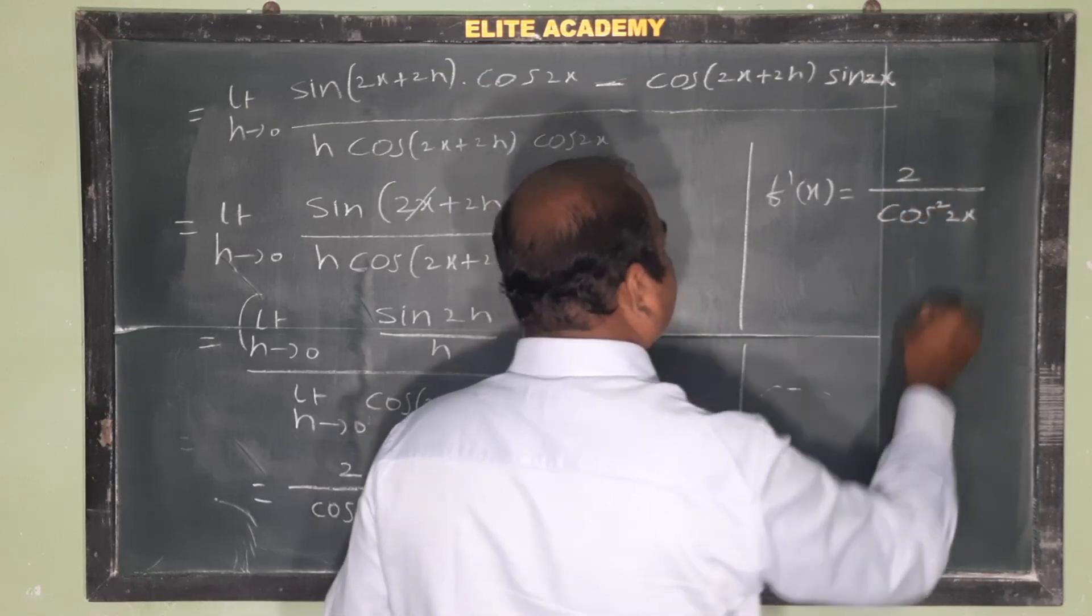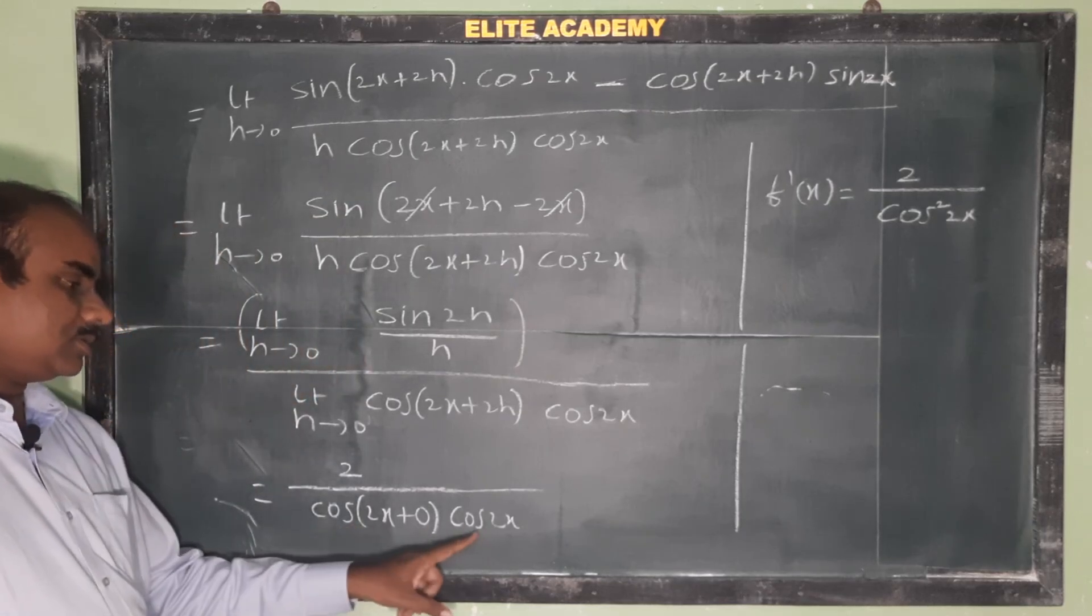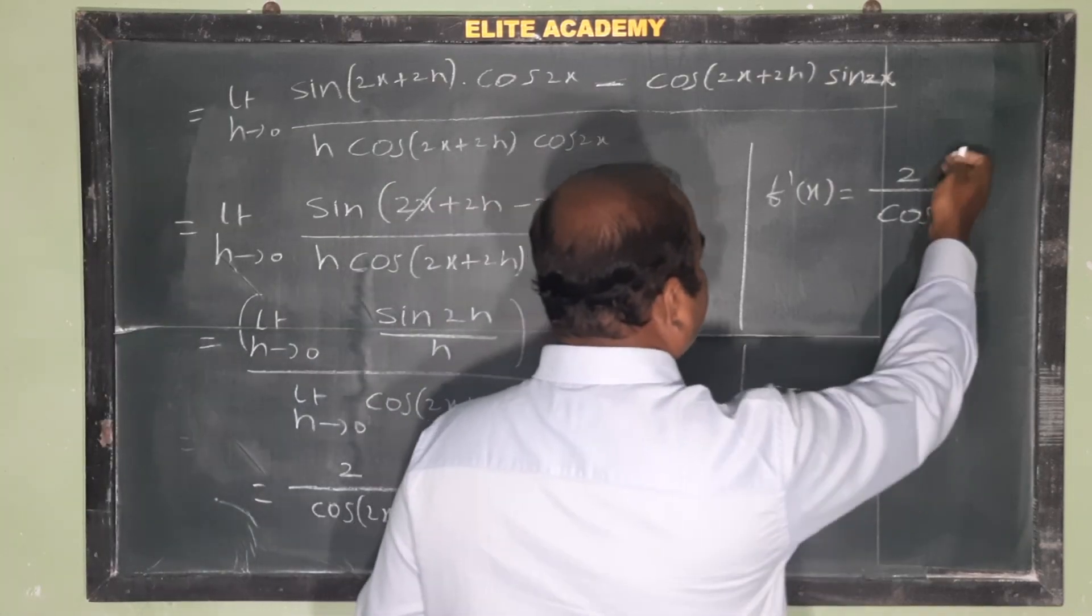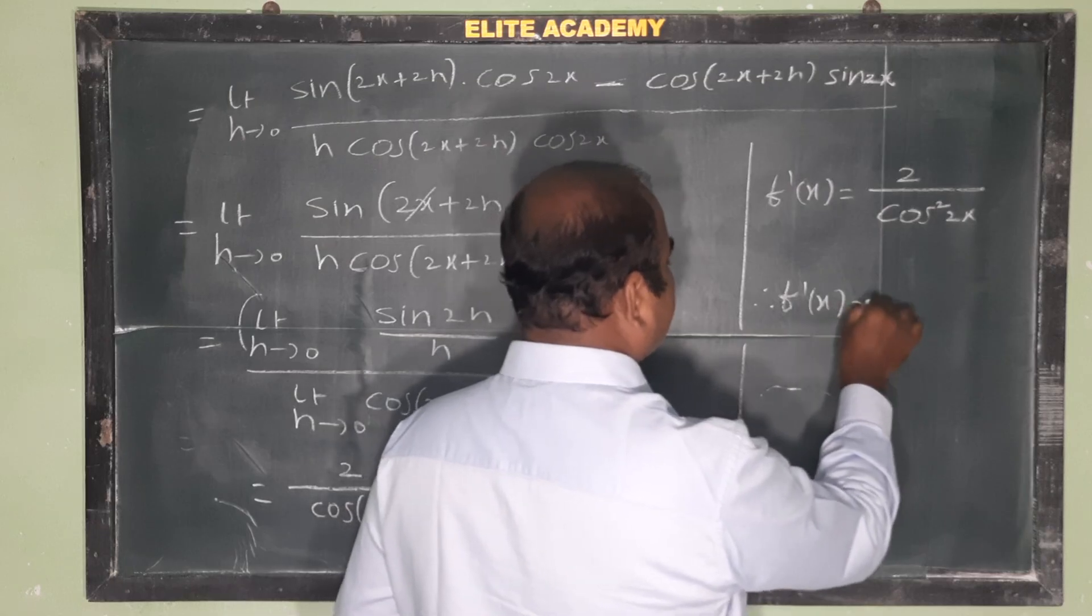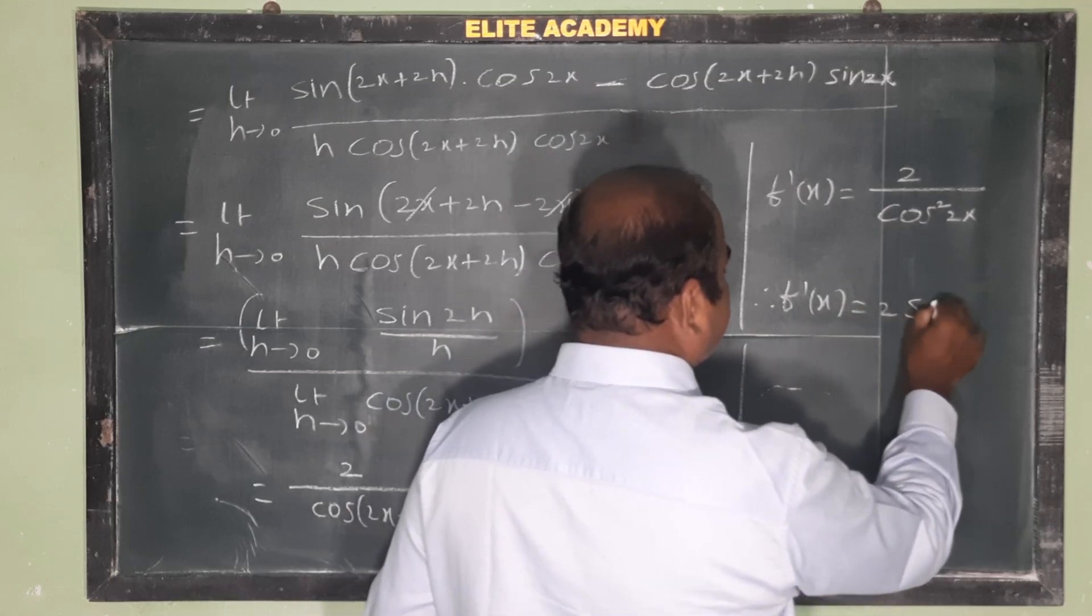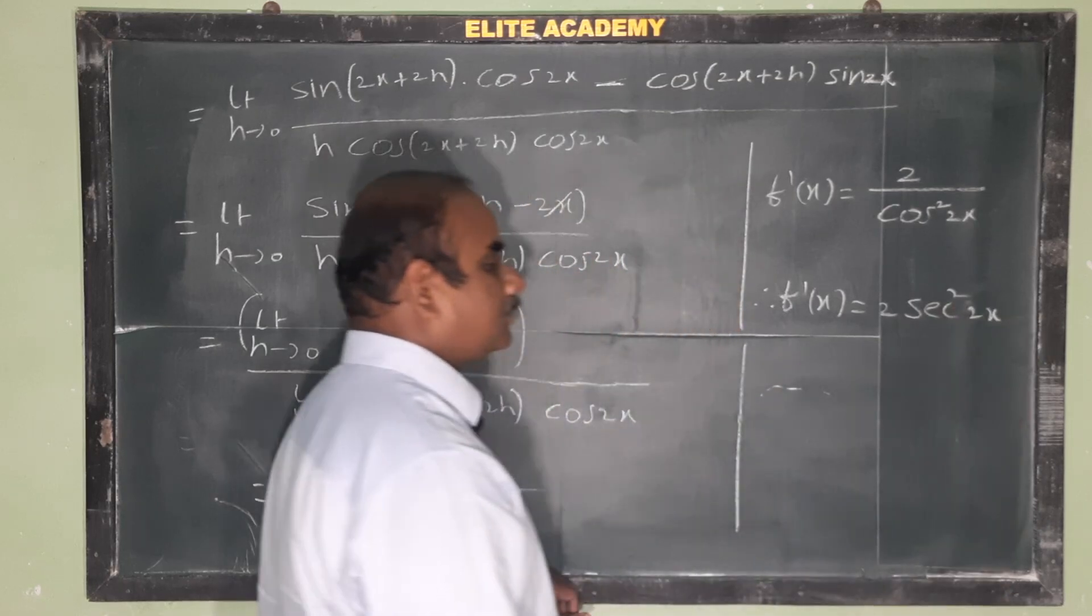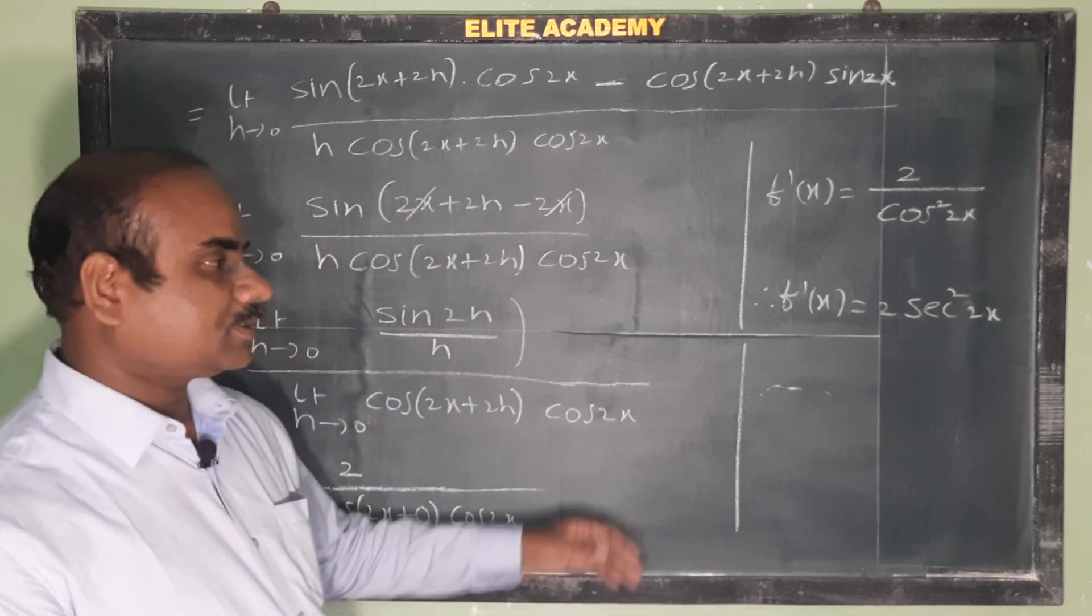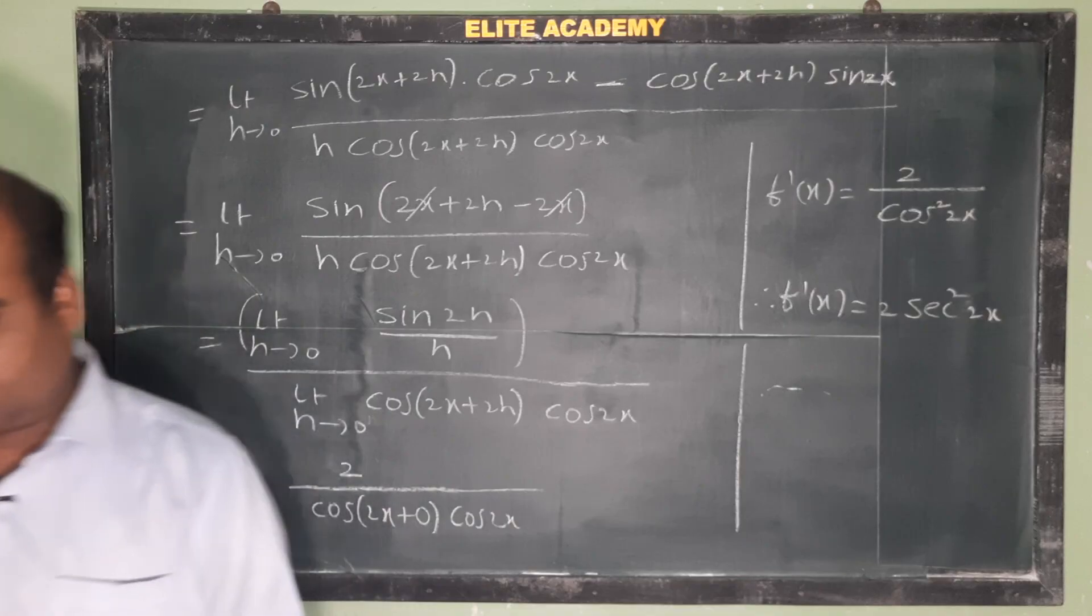Finally, f'(x) equals 2 by cos square 2x. This is cos 2x times cos 2x equals cos square 2x. When we take the numerator, f'(x) equals 2 by cos square, which is sec square 2x. So finally the answer is 2 sec square 2x. This is the derivative of tan 2x using first principle.